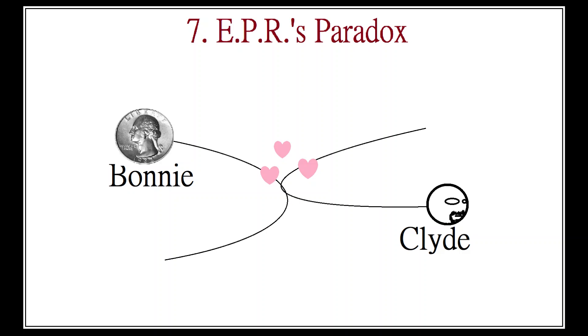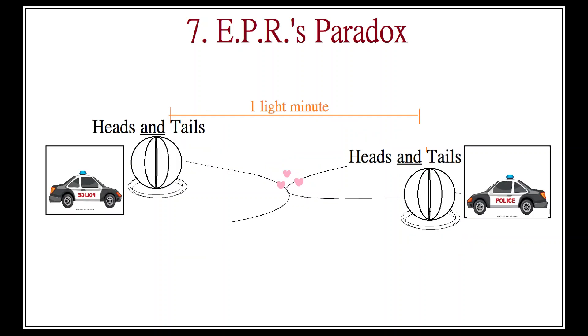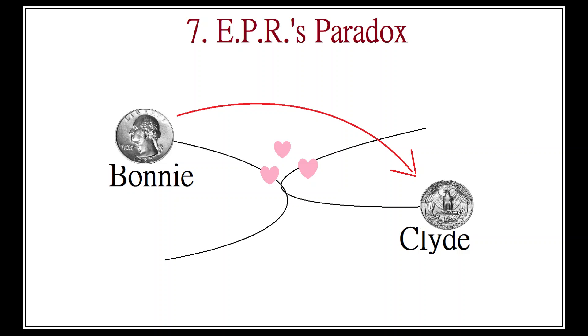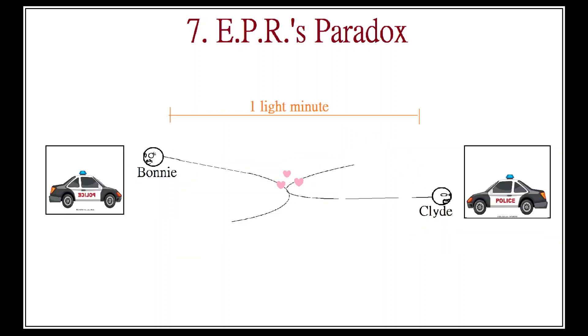So even though Bonnie and Clyde are indeterminate, they can still interact and become entangled. But with the understanding that if Bonnie ever gets measured and has to pick a state, then Clyde will simply change his state to compensate her decision. If she picks spin up, he'll pick spin down. If she picks spin down, he'll pick spin up. And herein lies the paradox.